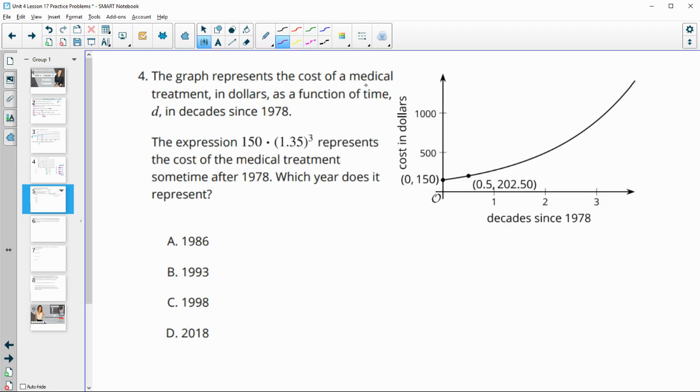In number four, it says the graph represents the cost of medical treatment in dollars as a function of time in decades since 1978. We have this expression represents the cost of medical treatment sometime after 1978. Which of these years does it represent?